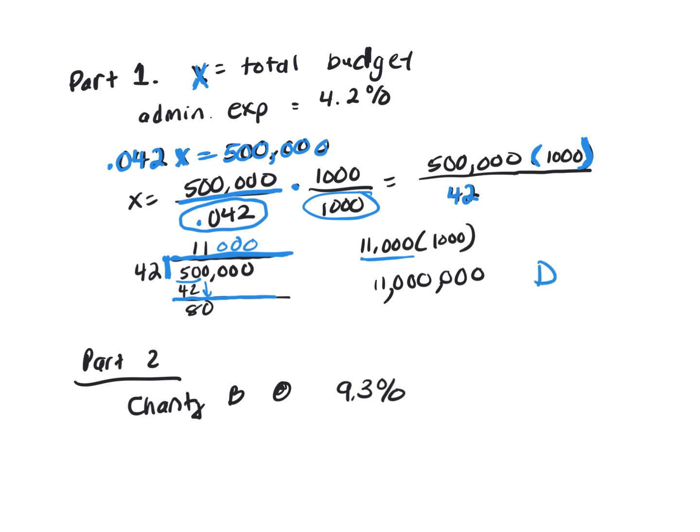Part two says, if all three charities are allocated the same amount of money to program expenses, then which charity allocated the largest amount to administrative? I just looked to see which one did the most administrative. That's going to be 9.3% with Charity B.